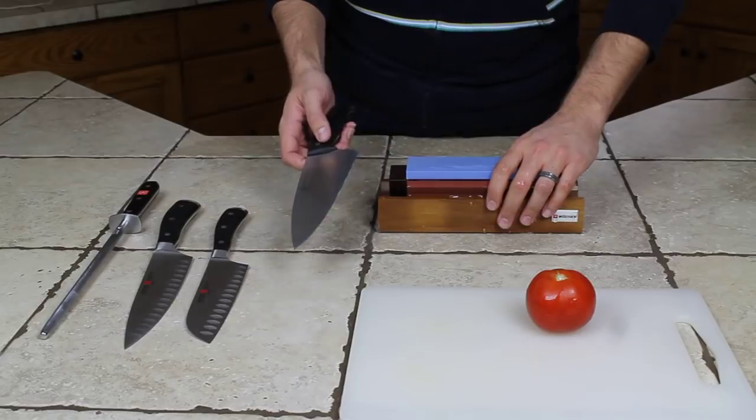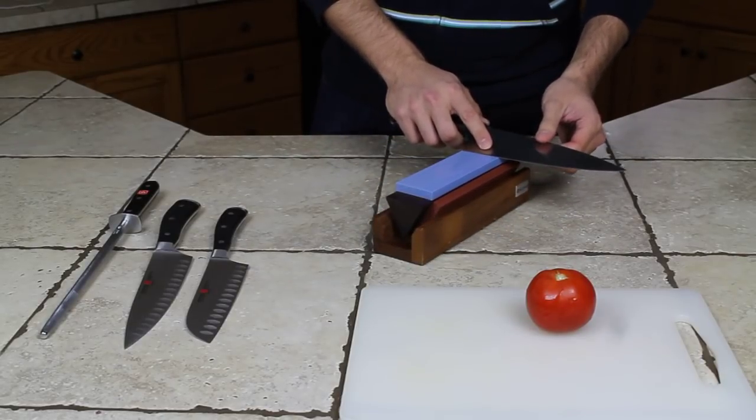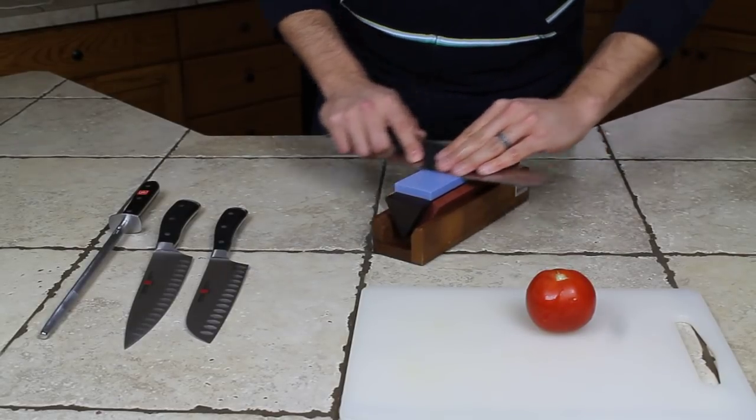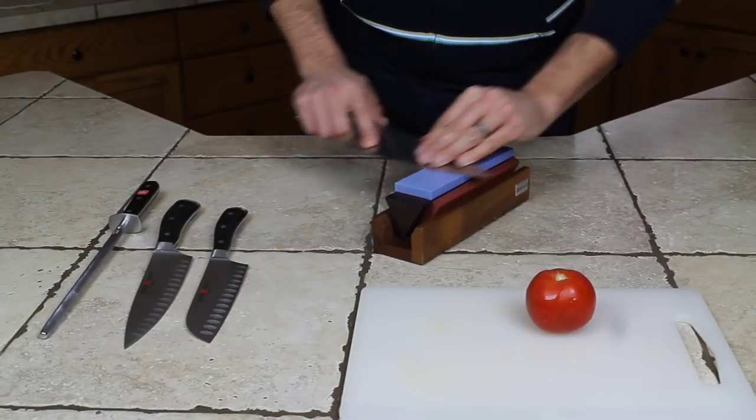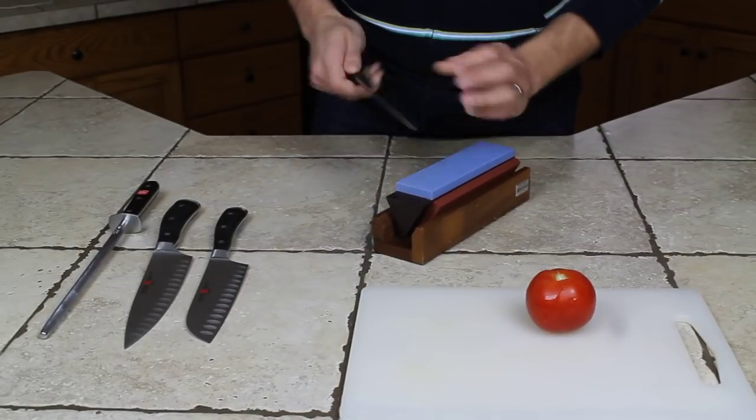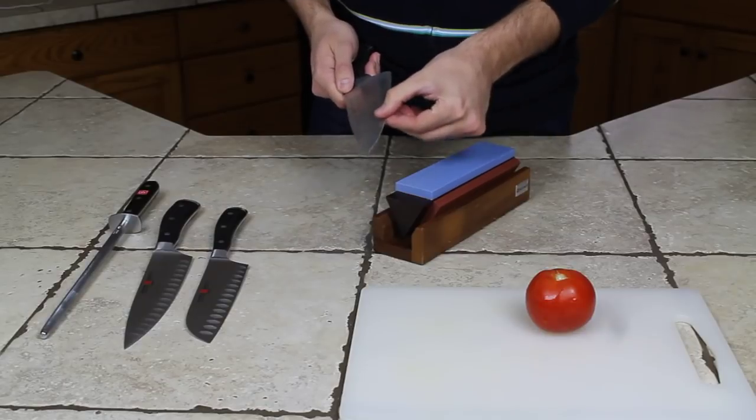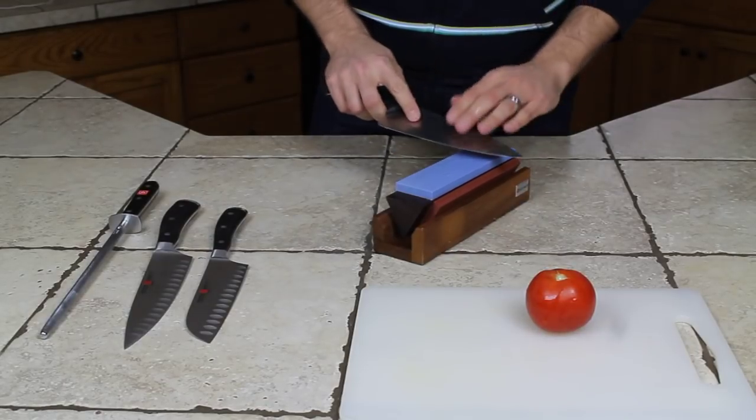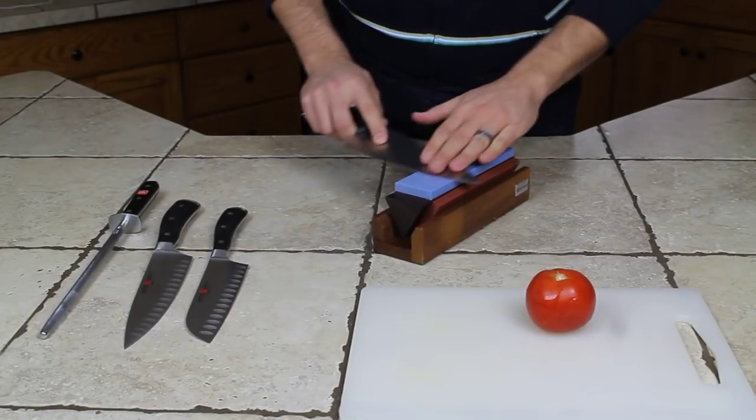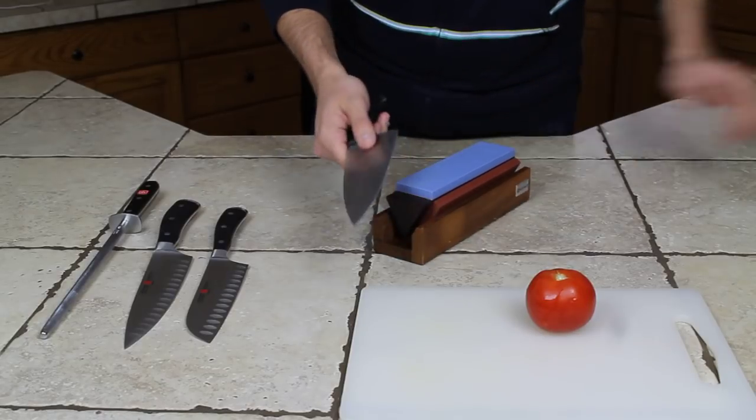And it's really not a difficult process. You hold it about 25, 30 degree angle and just move it back and forth on the stone. And the tips up here, this part usually gets dull the most, so spend some extra time on there. You go back and forth and then you switch direction.